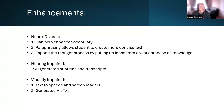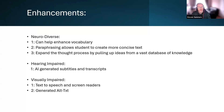Paraphrasing allows students to create more concise text, as students can often produce rambling and sometimes incoherent text which loses the emphasis of their writing. AI can also expand the thought process by drawing ideas from a vast database of knowledge, allowing students to evolve their thinking by drawing information from other sources.